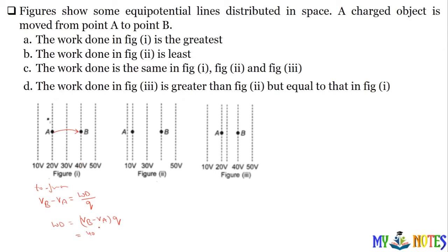Work done poochha gaya hai. To work done hoga: VB minus VA into Q. Is wale case mein V potential 40 pe hai, minus A ka potential 20 — to yeh aapka nikalta hai 20Q. Doosre case mein bhi A 20 volt pe hai aur B 40 volt pe hai, to work done same ayega: 20Q. So the work done is same in figures 1, 2, and 3. C is the correct option.